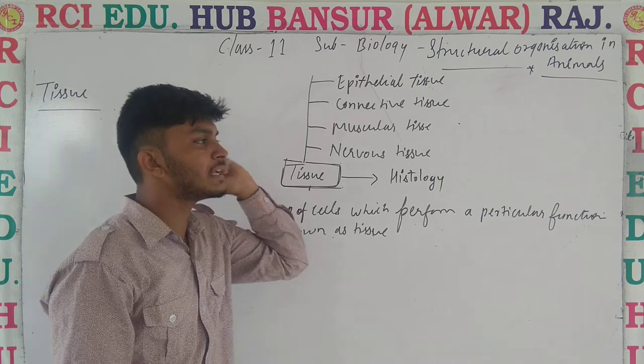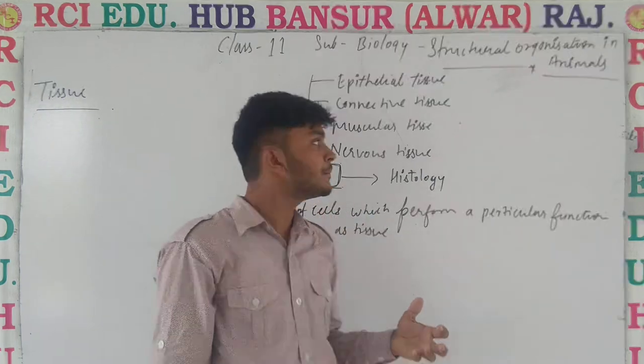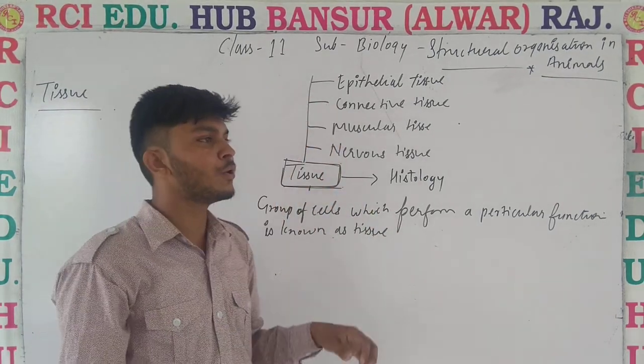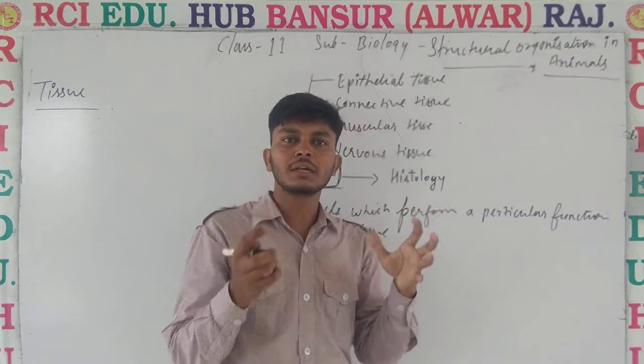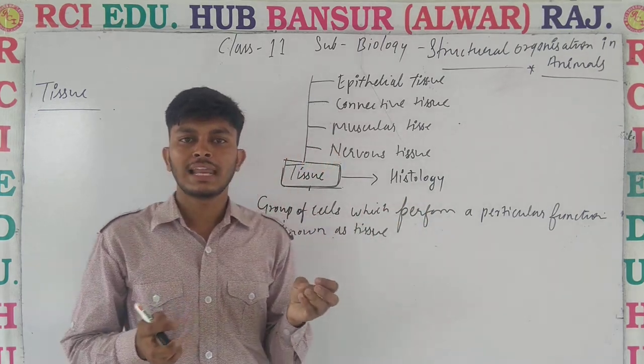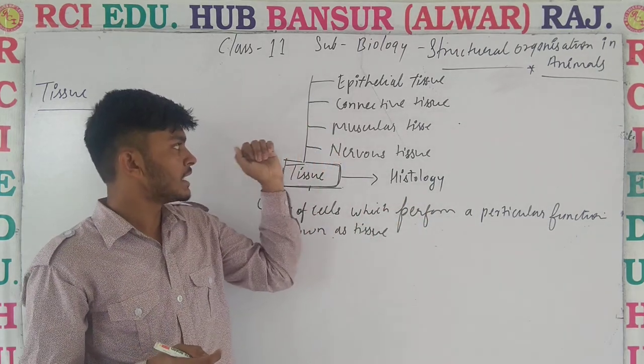In epithelial tissue, we'll talk about epithelial. In connective tissue, we'll talk about the structures that are connecting all parts of the body — like bones, like cartilage, like blood.